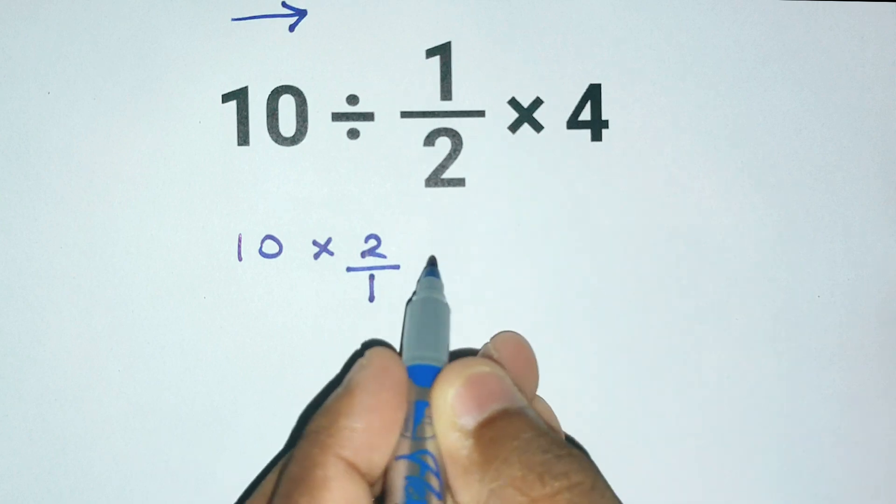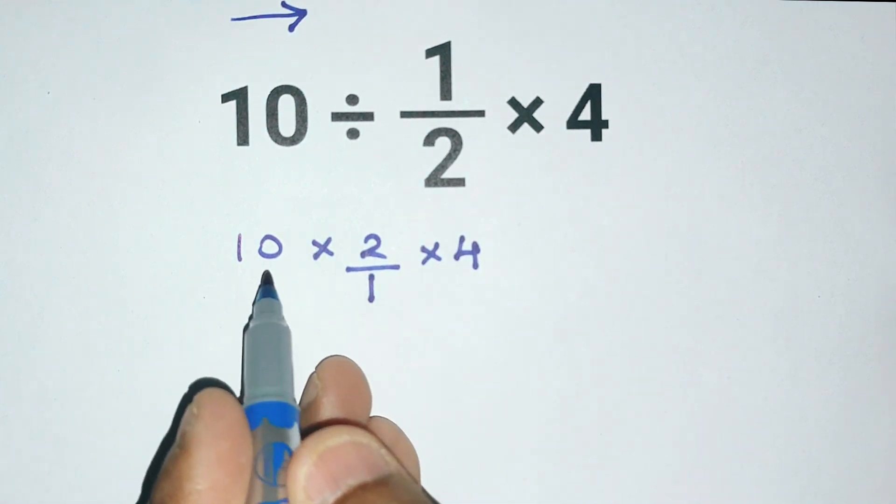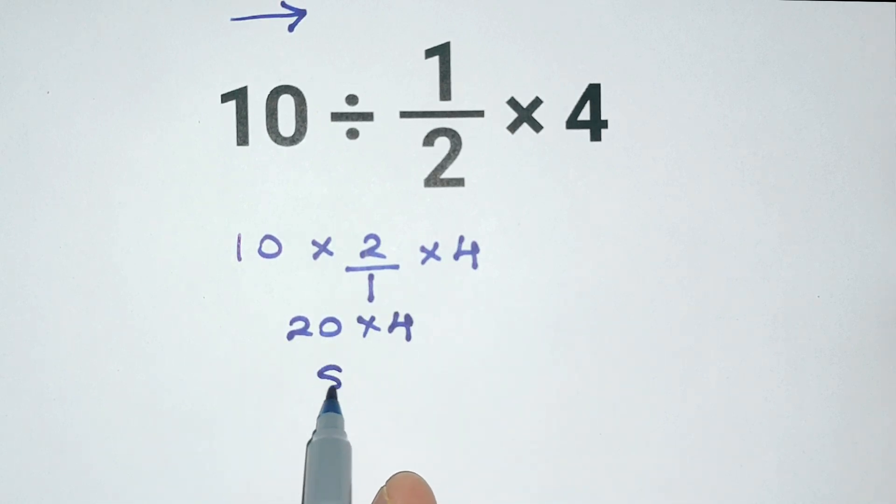And then we still have to multiply this by 4. 10 times 2 is 20, and 20 times 4 equals 80. So the correct answer to this problem is 80.